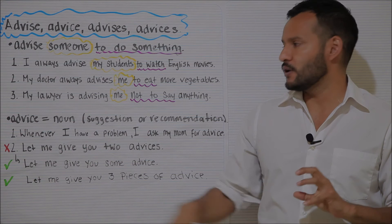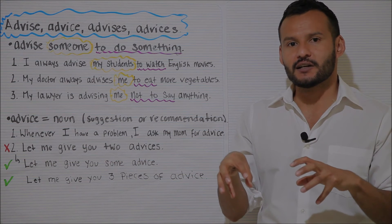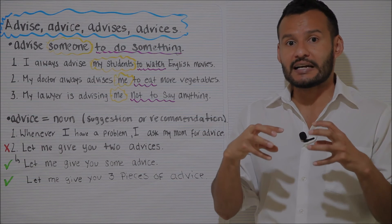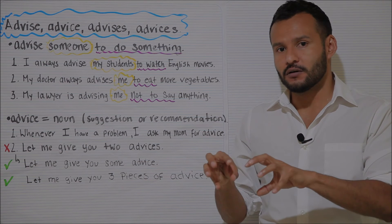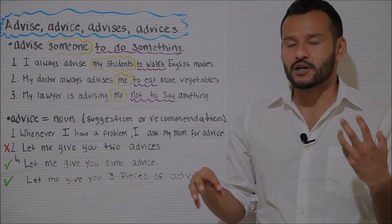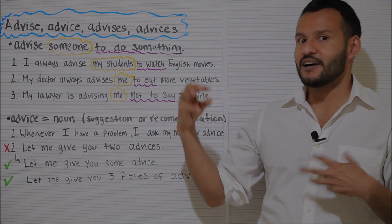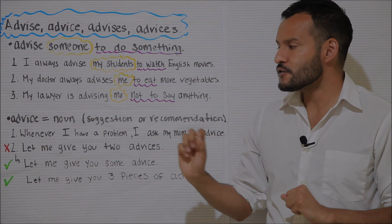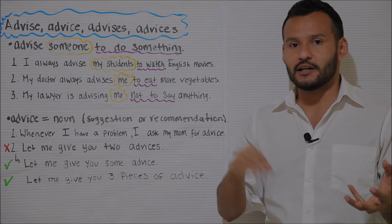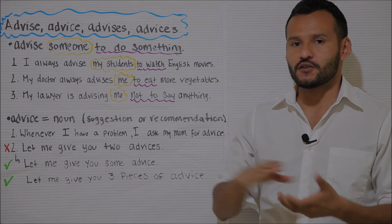One problem to avoid with the noun form is that if you're learning English as a second or foreign language, maybe the equivalent in your language is a countable noun. However, in English it is not. The word stays as 'advice' regardless of whether it's one suggestion, two suggestions, or three suggestions — so the word 'advices' doesn't really exist. Don't say 'let me give you two advices.' Just say 'let me give you some advice,' regardless of how many actual suggestions you make.